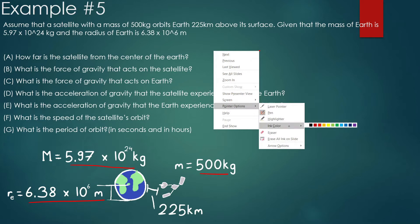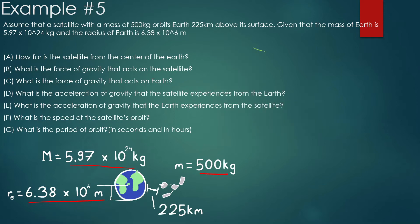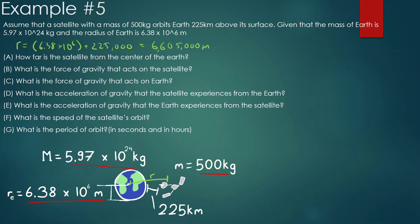We're looking for how far this satellite is from the center of the Earth all the way to where it's orbiting. So r is going to be equal to the radius of the Earth — 6.38 times 10 to the 6 — plus 225,000 meters. This gives us how far the two masses are from the center of mass of each other. We get 6,605,000 meters.